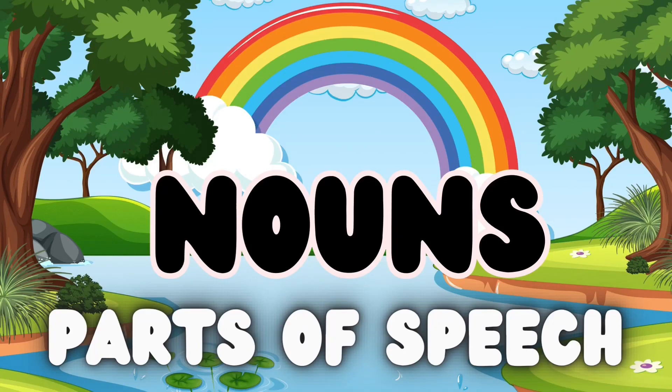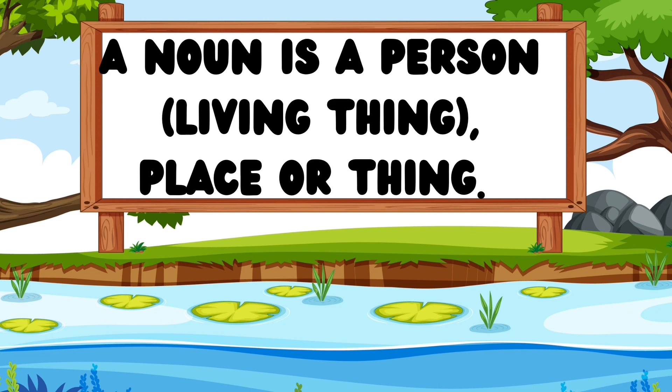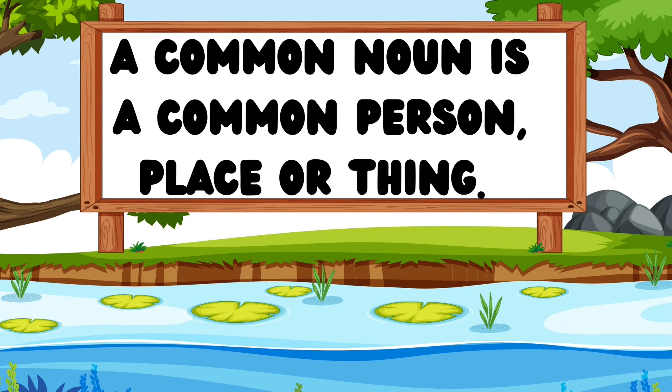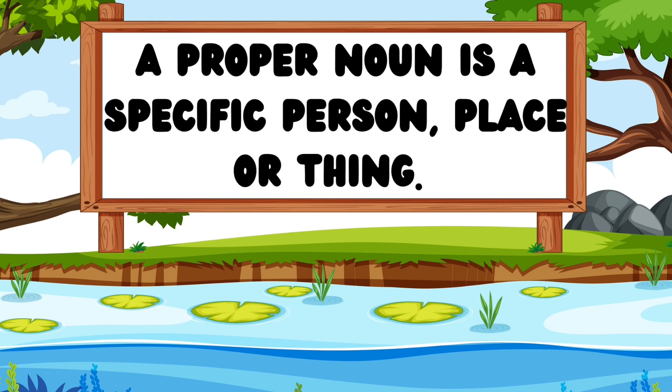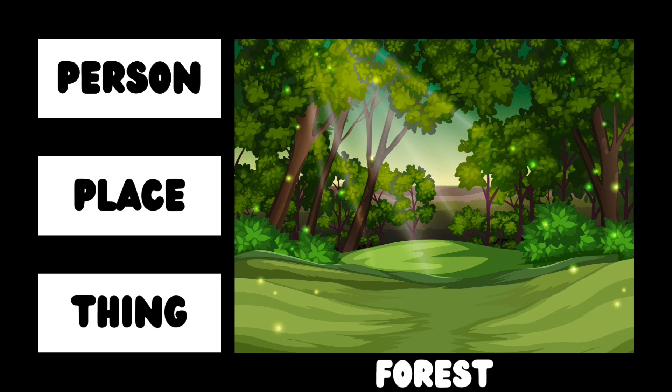Hello kids! Today we are starting with parts of speech: noun. A noun is the name of a person, place, or thing. It can also be animals, as they are living. It can be a common noun, that is the name of a common person, place, or thing. A proper noun is the name of a proper person, place, or thing.